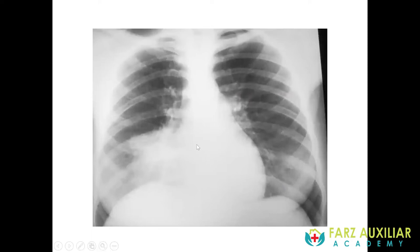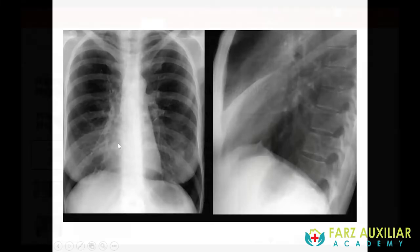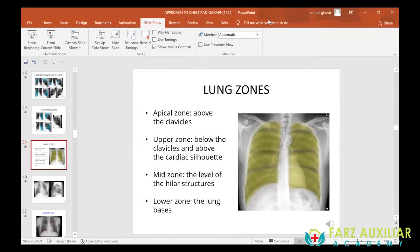As you can see here, we cannot see the right heart border, which should have been visible over here. That is because there is a consolidation in the middle lobe — the consolidation has silhouetted the right heart border. This is an example of a silhouette sign.